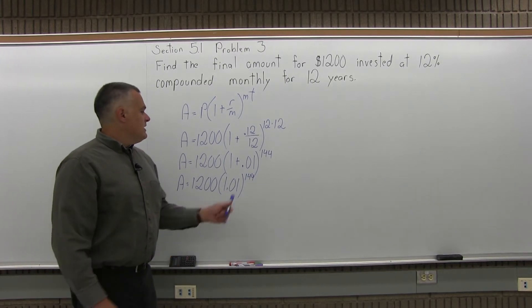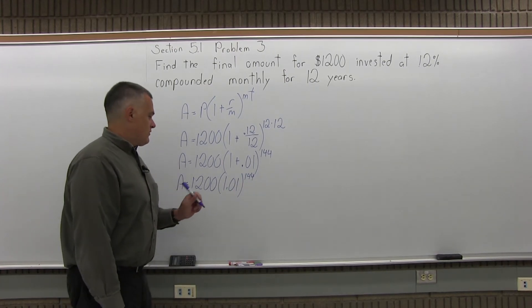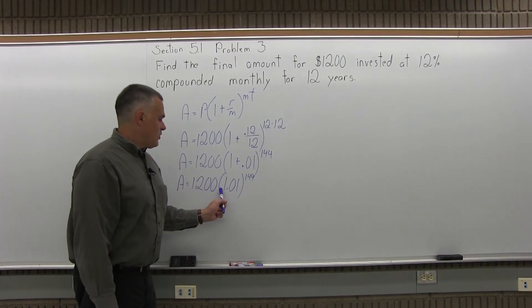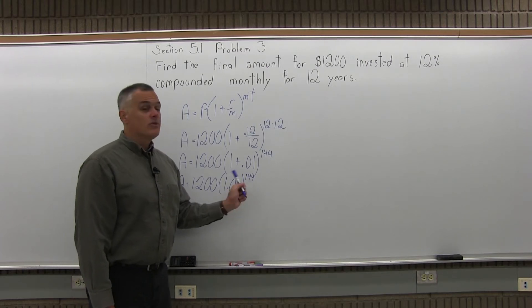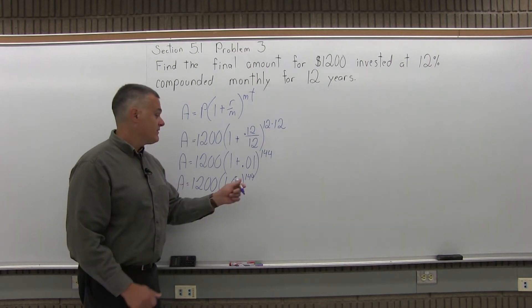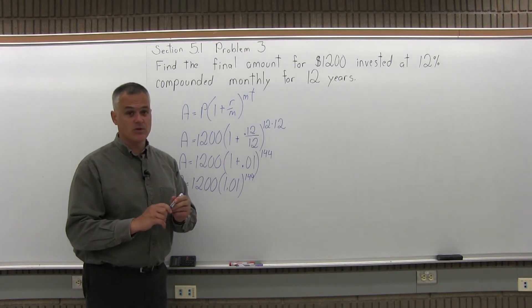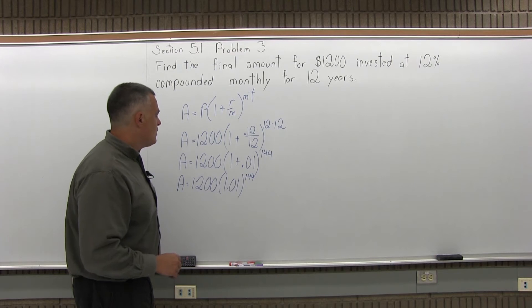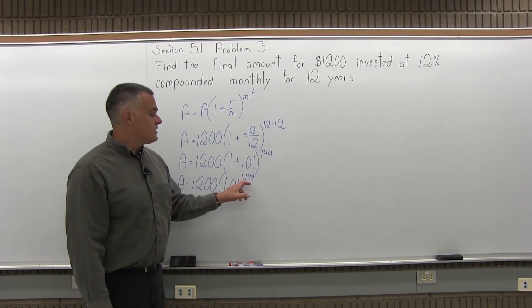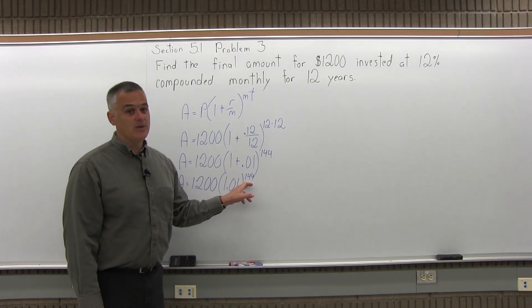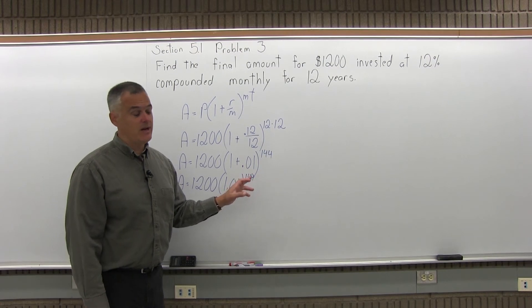So at this point what I need to do is that exponent of 144, I have 1200 times 1.01 to the 144th power. You have to do the exponent before you do the multiply, that's extremely important, that's the order of operations that changes the answer completely. So to do 1.01 to the 144th power, you definitely need to do it with a calculator.